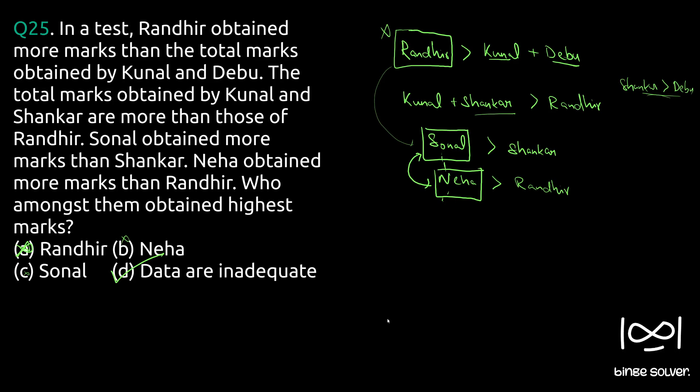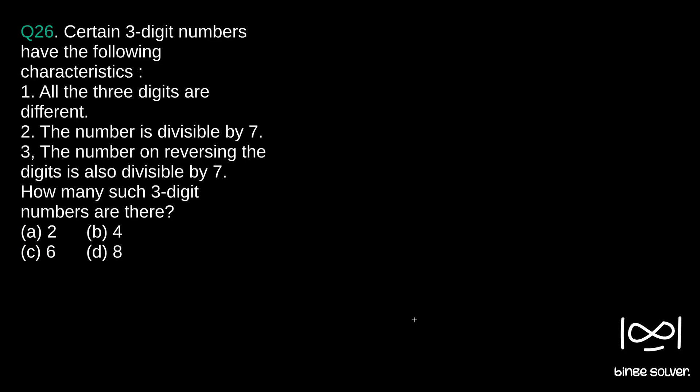Next question, question 26. Certain three-digit numbers have the following characteristics: all three digits are different, the number is divisible by 7, and the number on reversing the digits is also divisible by 7. How many such three-digit numbers are there?